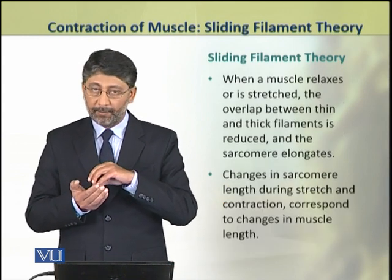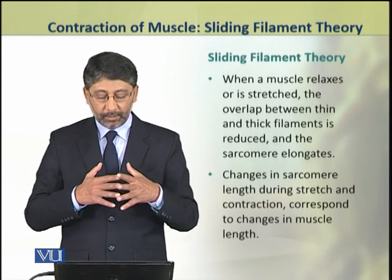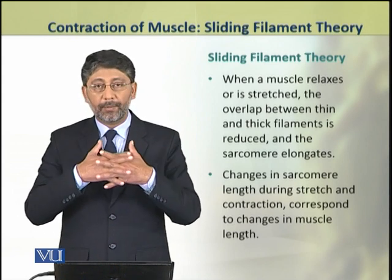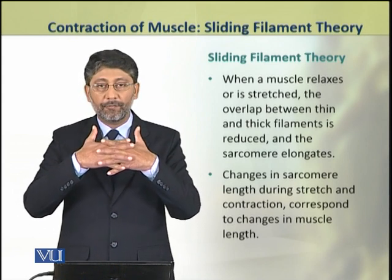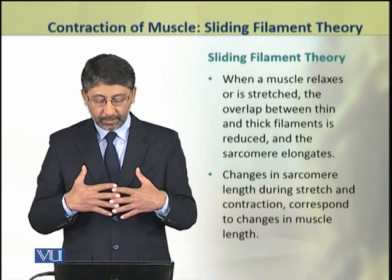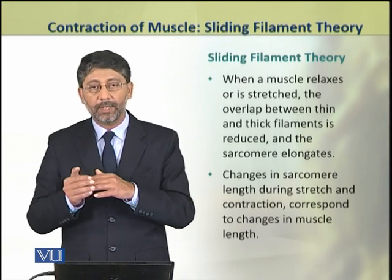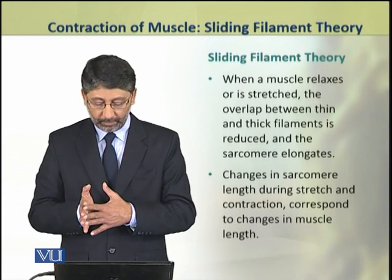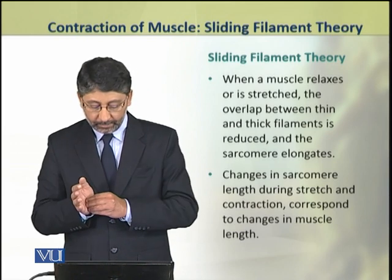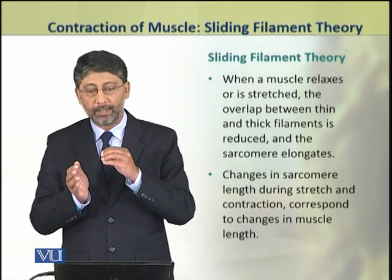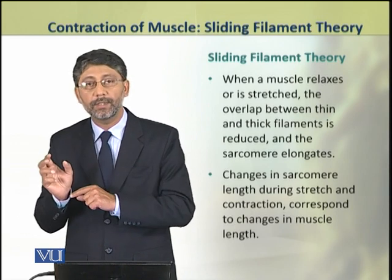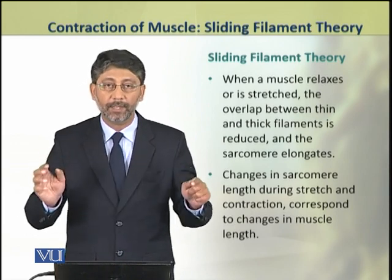When a muscle relaxes or is stretched, the overlap between the thin and thick filaments is reduced. As a result, the sarcomere elongates. These changes in sarcomere length during stretch and contraction correspond to the changes in overall muscle length.